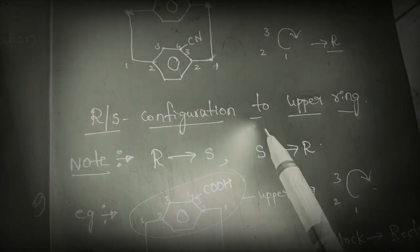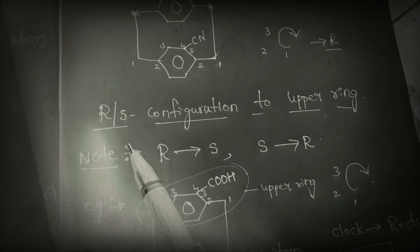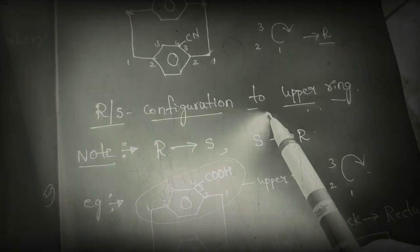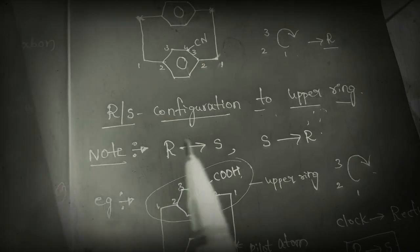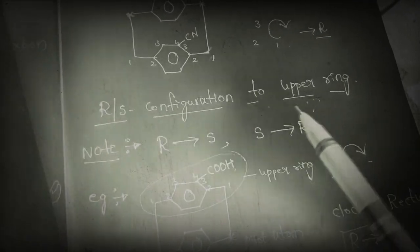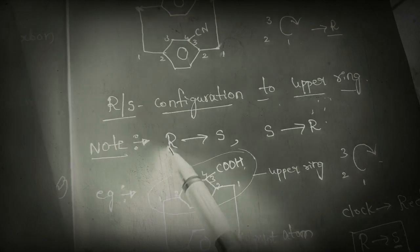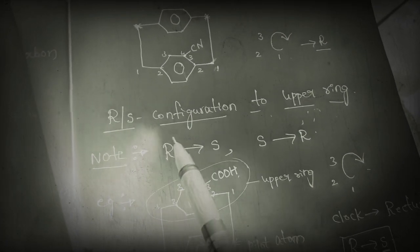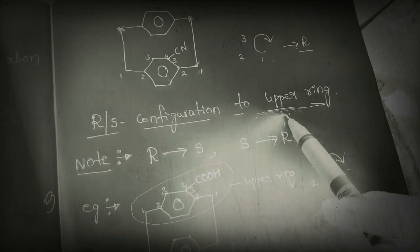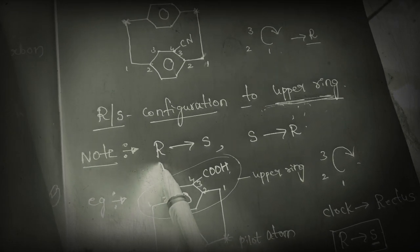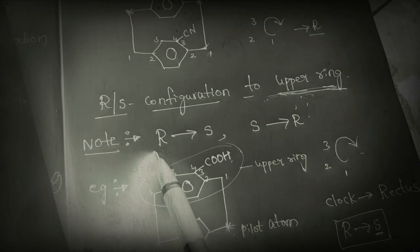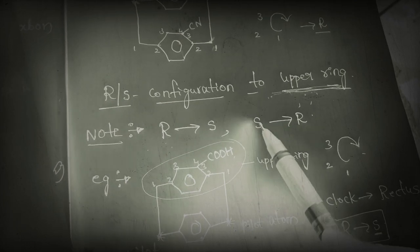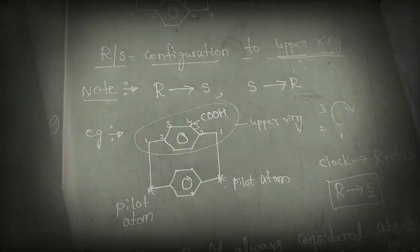Next, assigning R or S configuration to the upper ring. The method is entirely the same — the only difference is: while assigning R or S configuration to the upper ring, if we get R, we must change the configuration to S; if we get S, we must change it to R. Let us see an example to understand it easily.